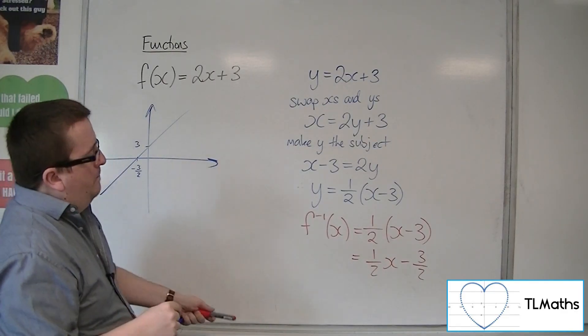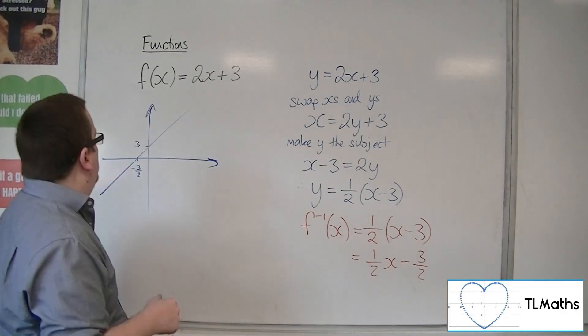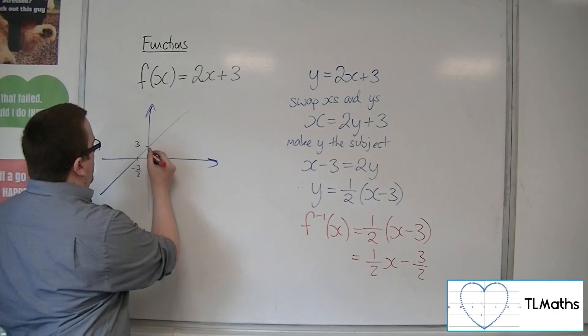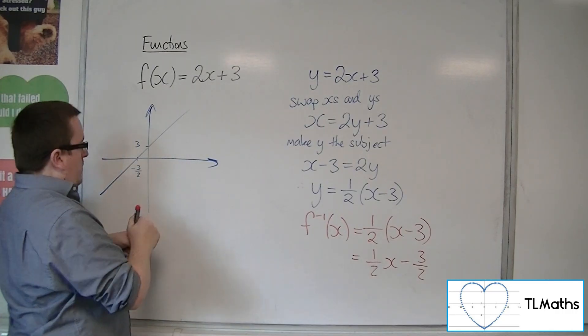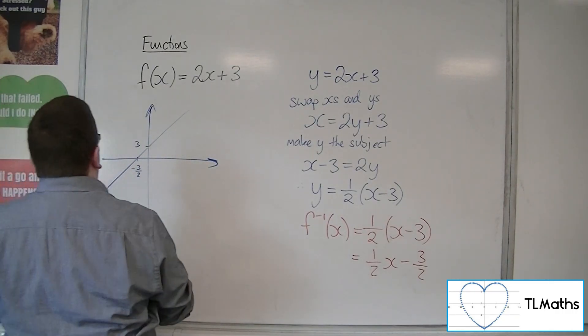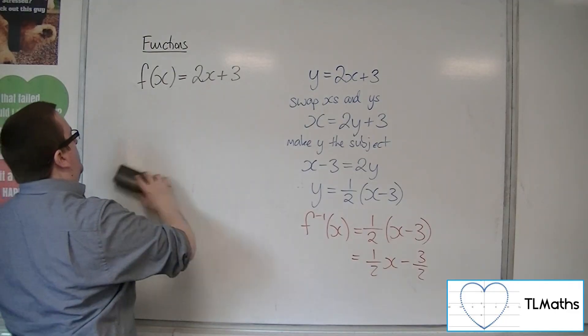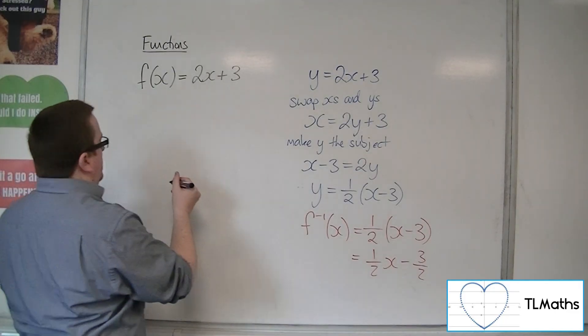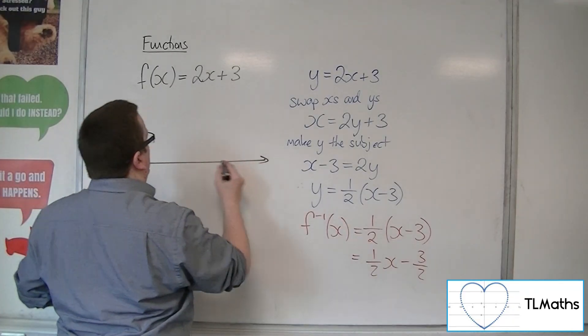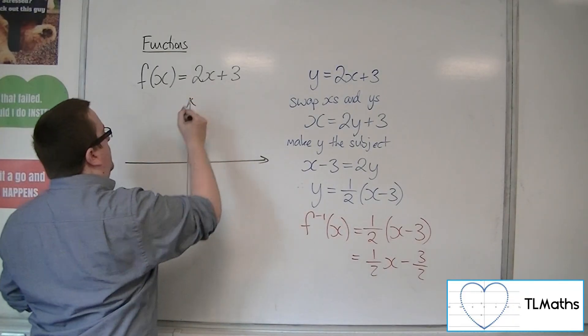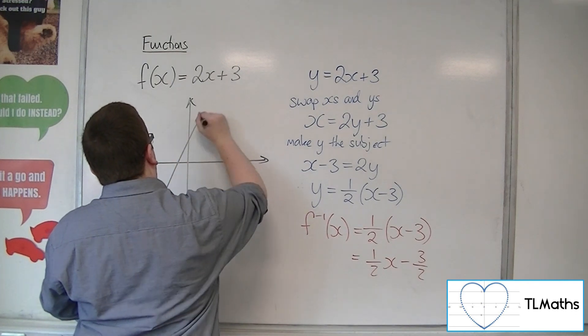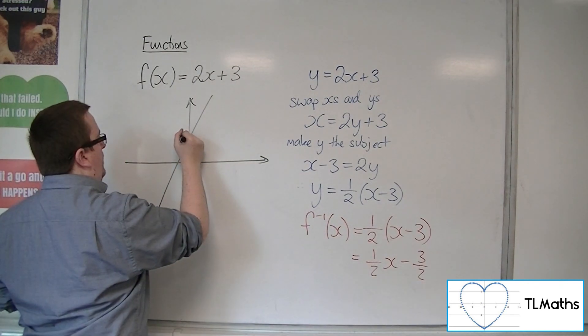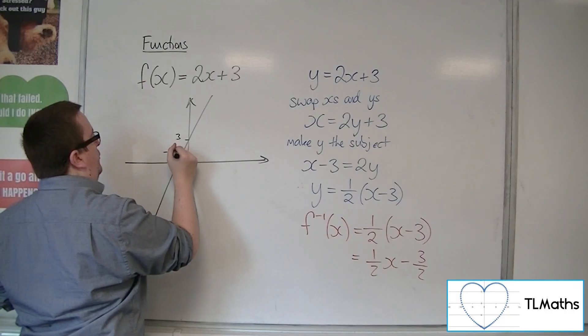So then, half x minus 3 halves, that would go through minus 3 halves. You know, let's start again with this. Let's make it a little bit more accurate. y equals 2x plus 3. There's 3. There's minus 3 halves.